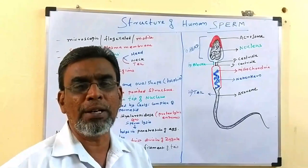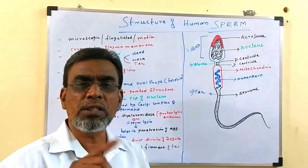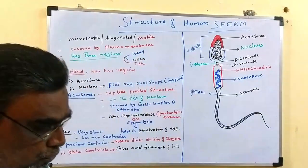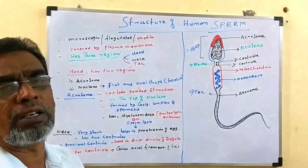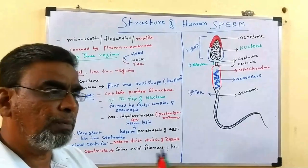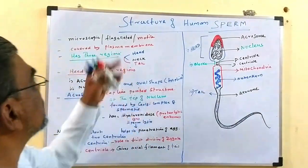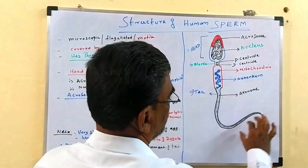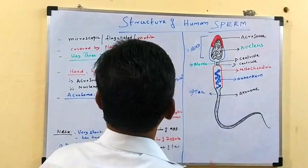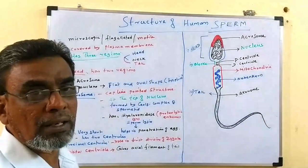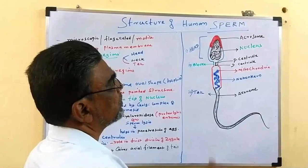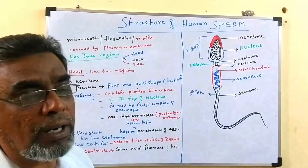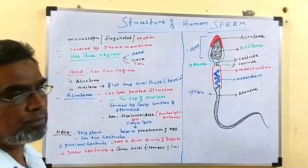Sometimes they ask: what is a motile gamete? Sperm. What is a non-motile gamete? Ovum. This sperm will swim to reach the egg, so it should move from one place to another — that is why it is called a motile gamete. The whole structure of the sperm, top to bottom, is covered by a plasma membrane.